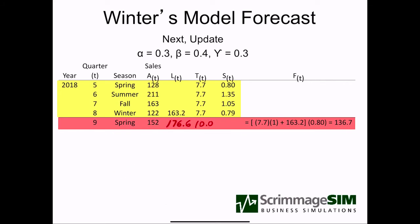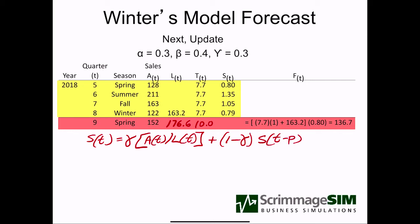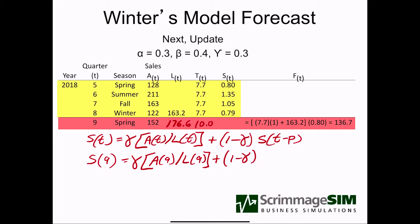Finally, we update the seasonal factor for spring. The seasonal factor updating formula is: S(t) = gamma times the actual value of sales in period t divided by the level in period t, plus one minus gamma times the seasonal factor in period t minus p. So we want a new spring seasonal factor for period 9: gamma times actual sales in period 9 divided by the level in period 9 — that's our observed seasonal factor with an updated level value — plus one minus gamma times the seasonal factor in period 5. Our last spring seasonal factor was 0.8.